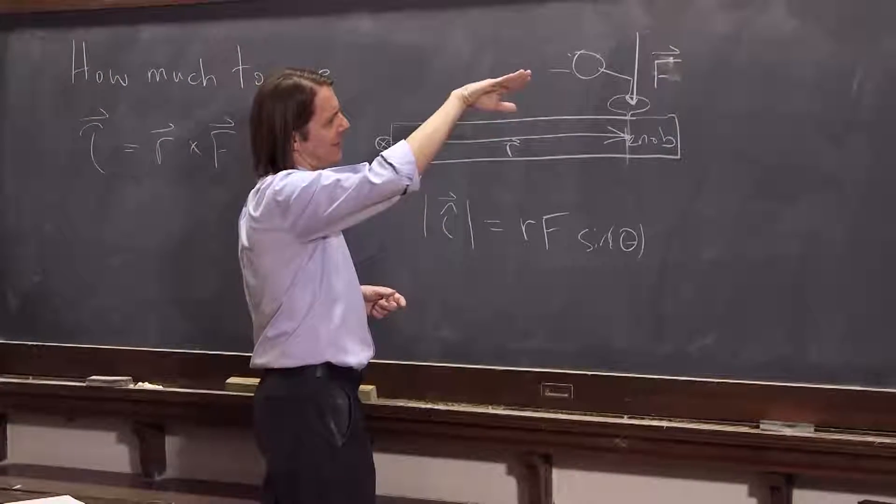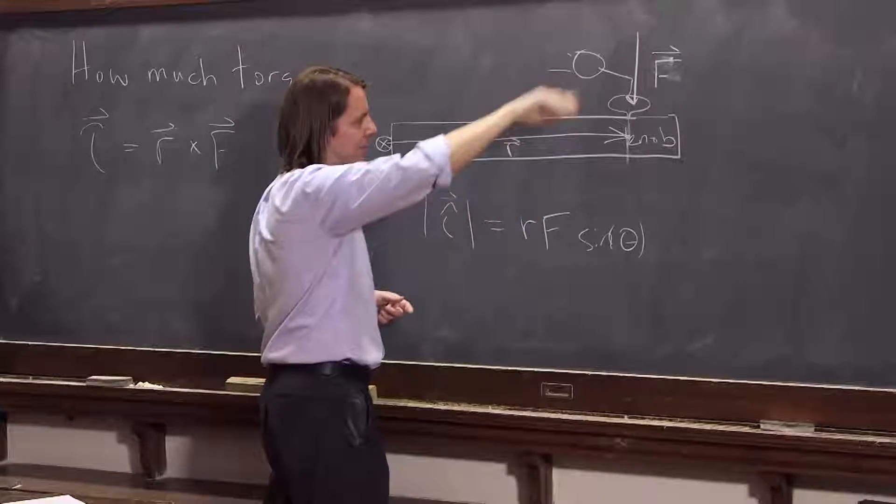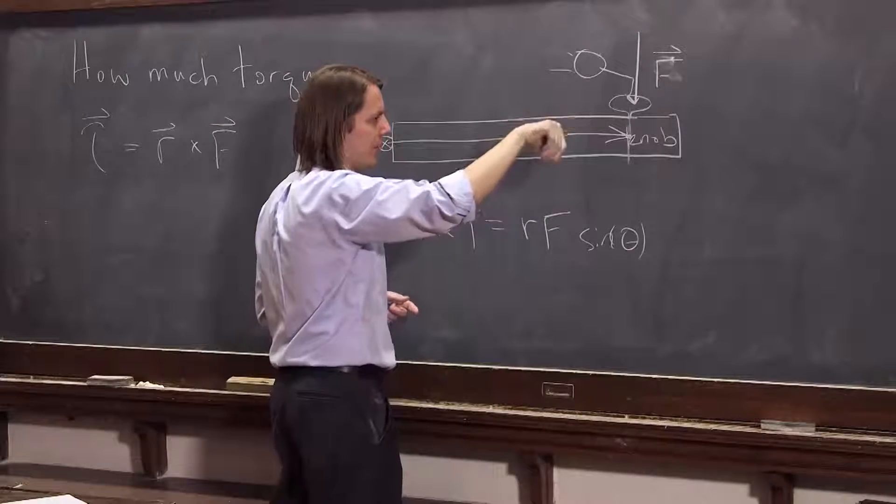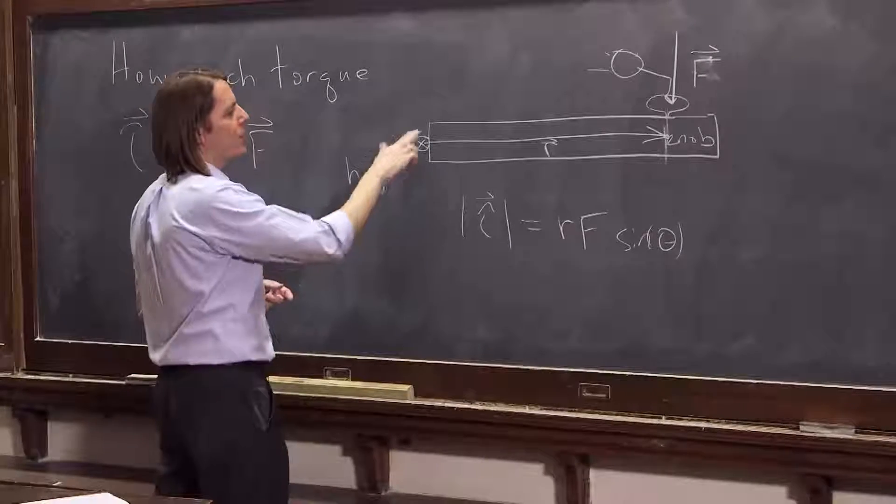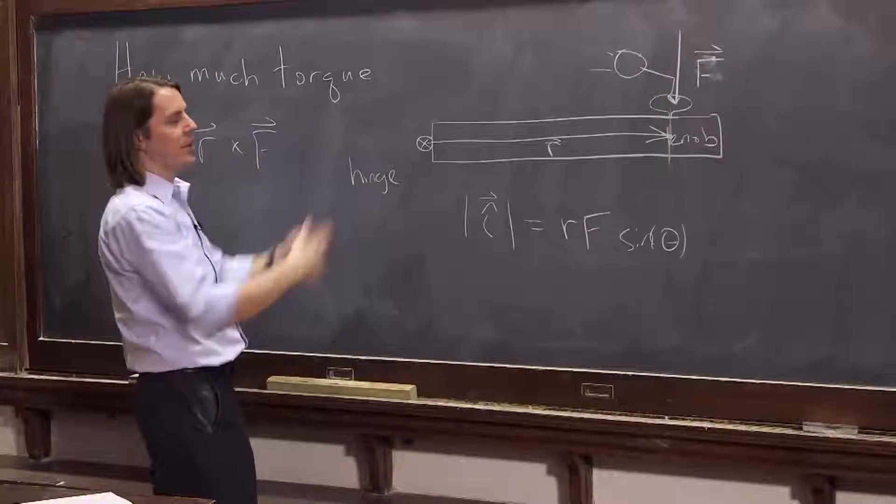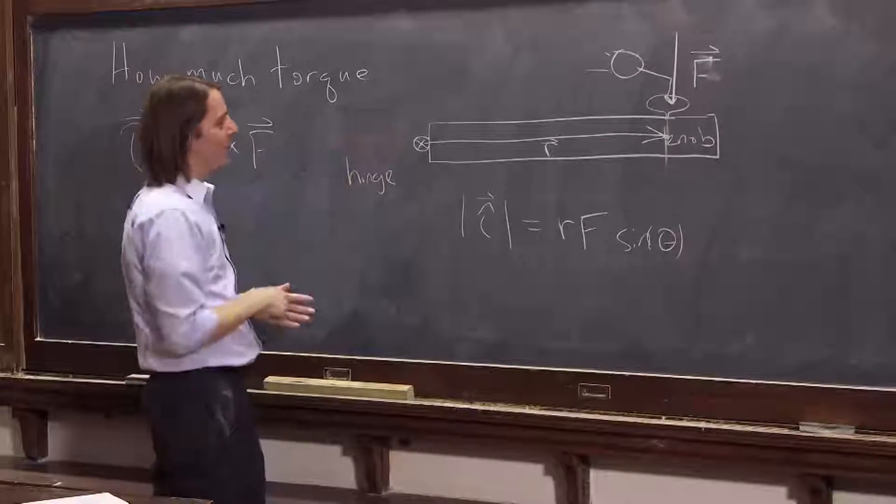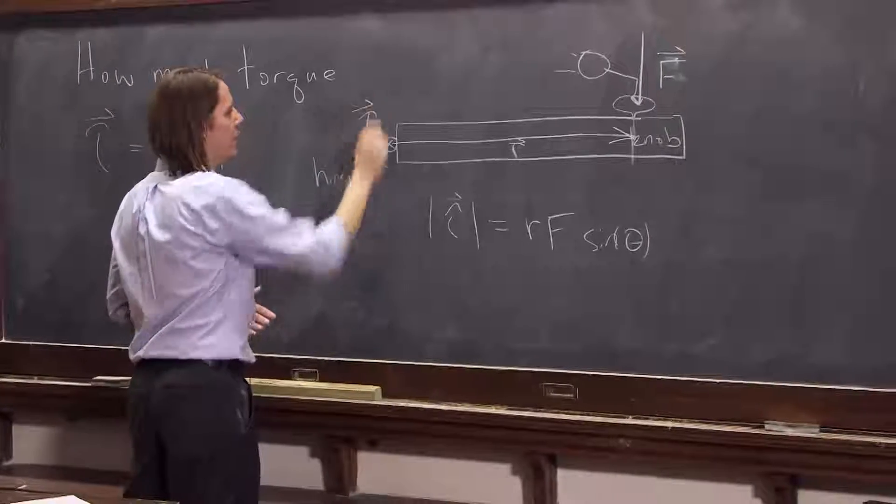R cross F. The torque is into the board. Usually we draw it over here actually where the hinge is. And I just happened to draw the hinge as the torque. I made the hinge look like a little vector going in. That's the torque.